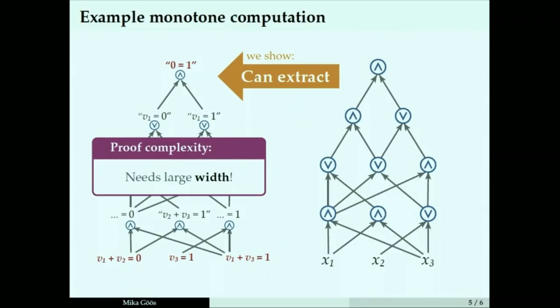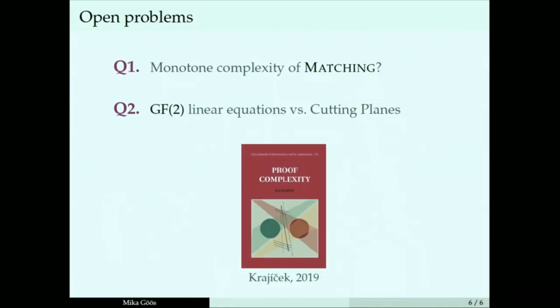Solve some open problems in monotone complexity, not all. For example, it's still open what the monotone circuit complexity is of the perfect matching function. Input is a graph, output yes if it contains a perfect matching. Razborov proved a quasi-polynomial lower bound. I want to prove an exponential lower bound. Maybe that's something I'll think about.